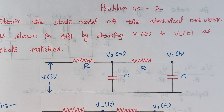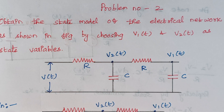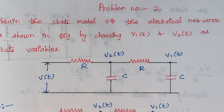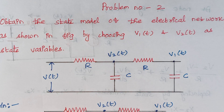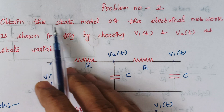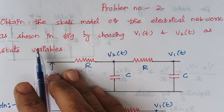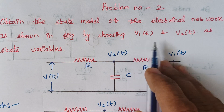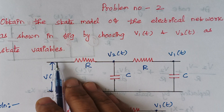Hello viewers, I am Kausalya. Today we are going to solve problem number 2 under the topic state space analysis. The problem is: obtain the state model of the electrical network as shown in the figure by choosing V1(t) and V2(t) as state variables.